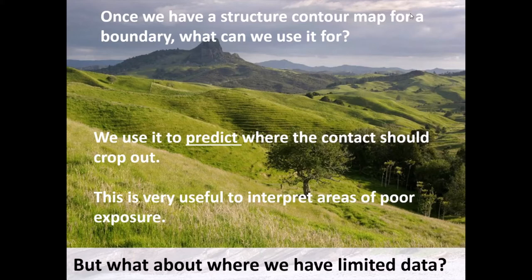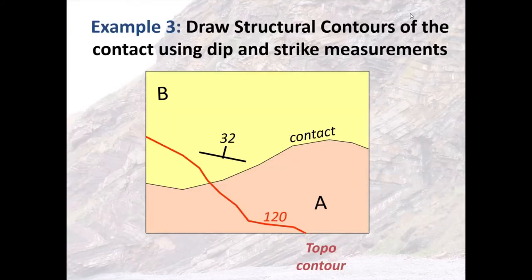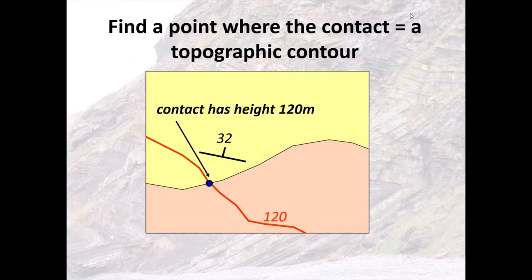But what about instances where we have more limited data? Let's look at an example where all we have is one dip measurement and only one location where our contact between rock unit A and rock unit B crops out — at a point where it intersects a topographic contour. At that intersection, we know the height of the feature is at 120 metres, so the height of our contact must also be 120 metres.